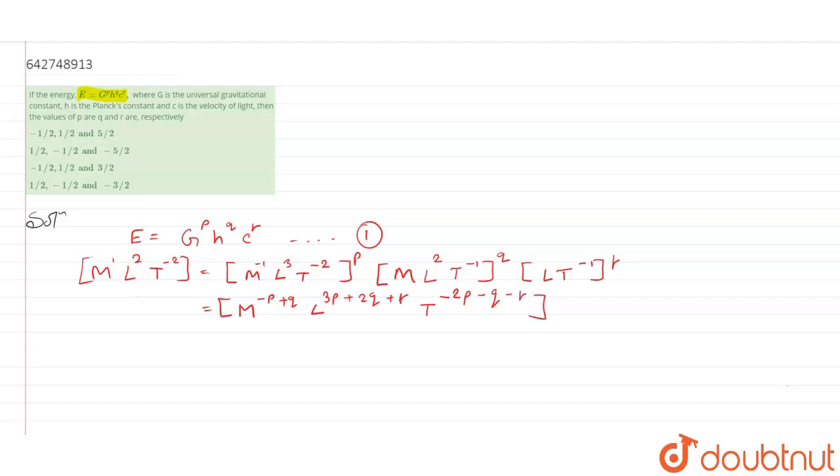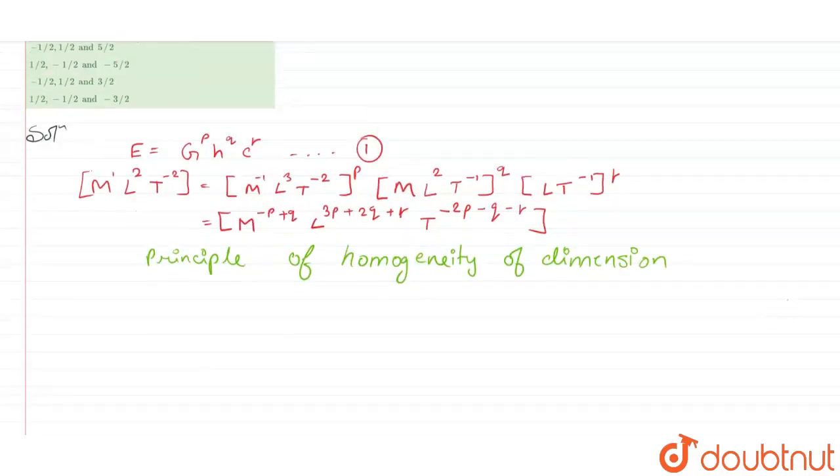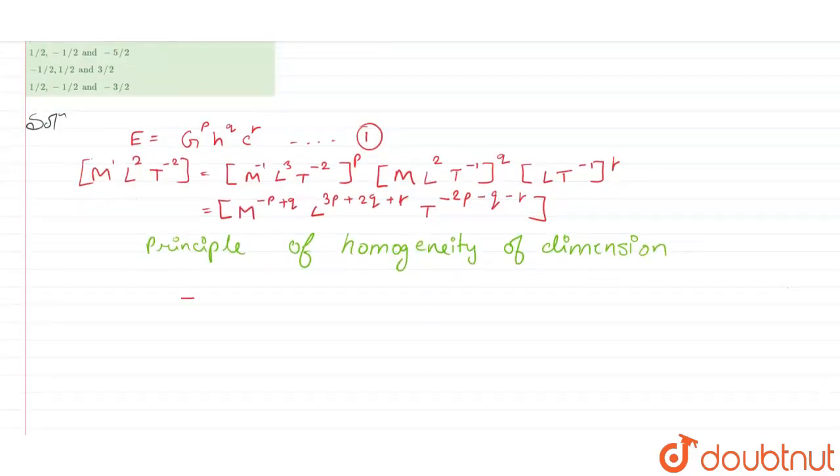So, here we will apply principle of homogeneity of dimension. So, we will get minus p plus q is equal to 1, we will name it equation 2. Then, we will get 3p plus 2q plus r is equal to 2, which will be equation 3.